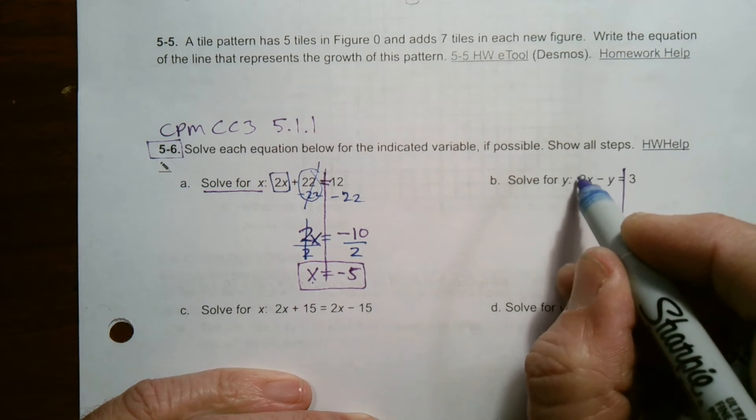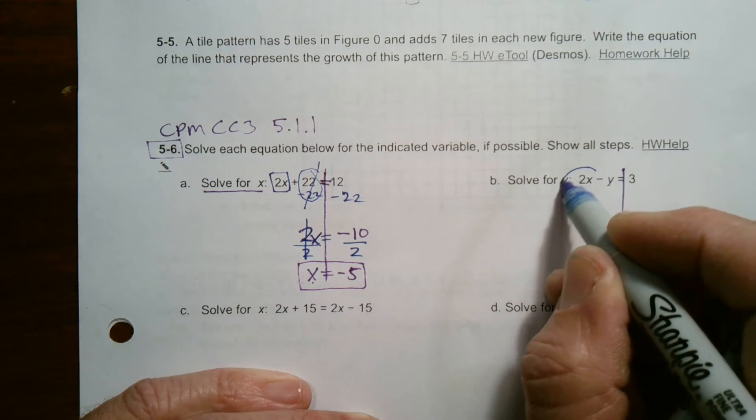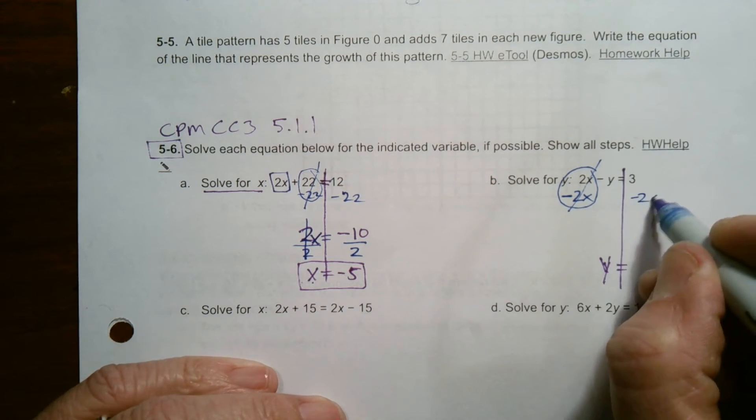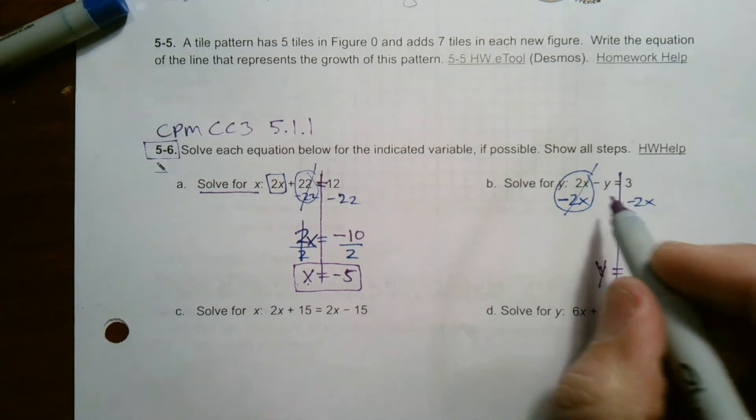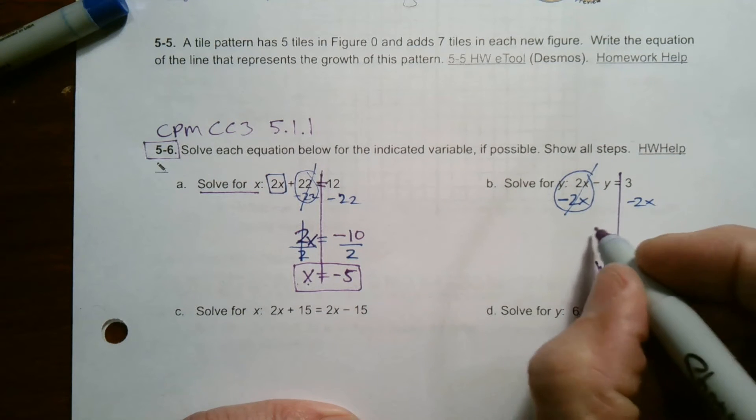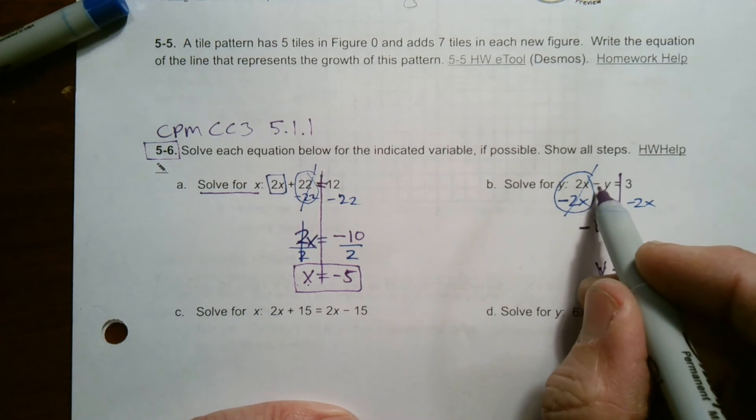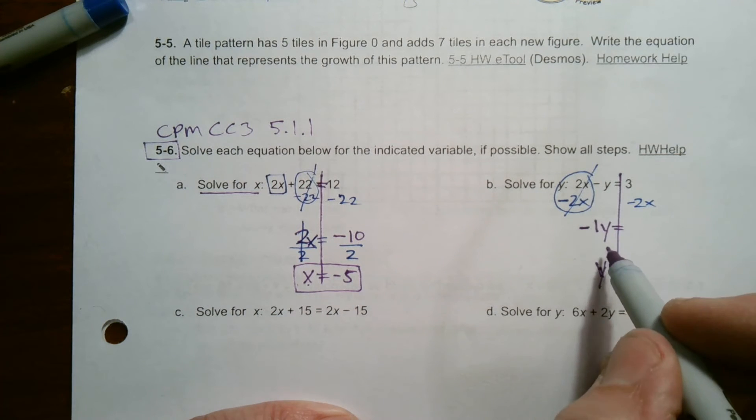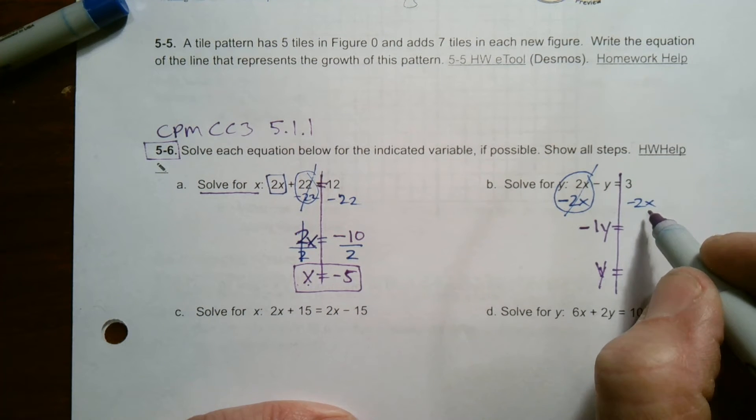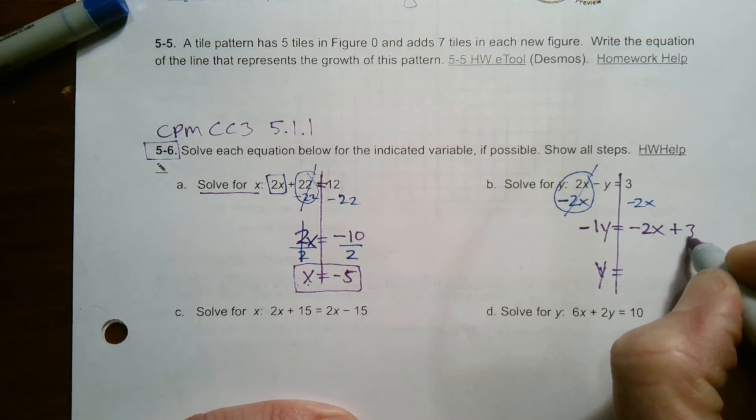Everything else in this case is going to be this positive 2x. So to get rid of that, you do negative 2x or subtract 2x. Positive 2x, negative 2x cancel out. And what you do to one side, you do to the other. How do I clean this up? Here's my next step. I've got that 2x disappeared. So I have this minus y. What does that mean? That means it's a negative 1y is what I'm left with on this side. And over here, 3 minus 2x, those are not like terms. So I can't combine them. So I just write them separately. And I always tend to put the variable term first, then the constant.